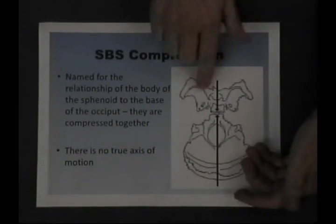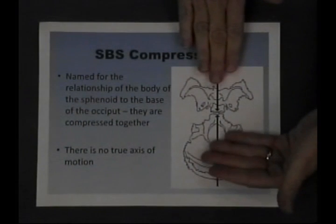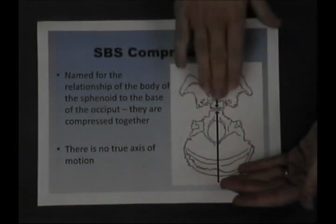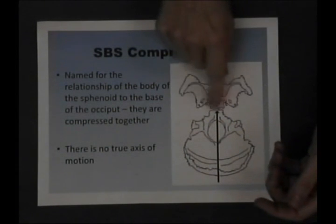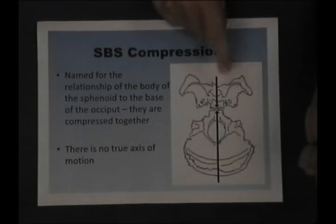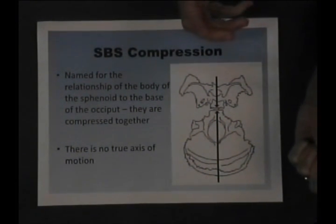There is no axis here. This is designed to show you that there's a compression between the sphenoid and the occiput. So the SBS is basically locked up. These are your patients that you have great difficulty in palpating any sort of motion whatsoever.